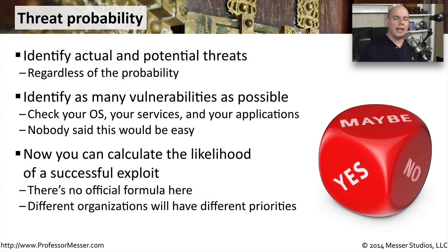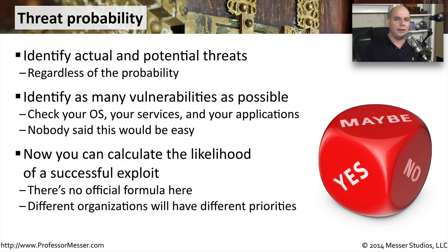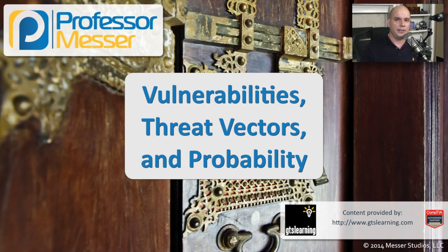Now we can start calculating how likely it might be that we would have an attack in our environment. There's no exact formula for this. You really have to look at the number of operating systems and exactly what you might have out there that's susceptible, then understand where the threat vectors are and how someone might gain access. This is going to be very different depending on the organization, but once you start examining this, you can get a better idea of just how susceptible you might be to these particular threats in your environment.